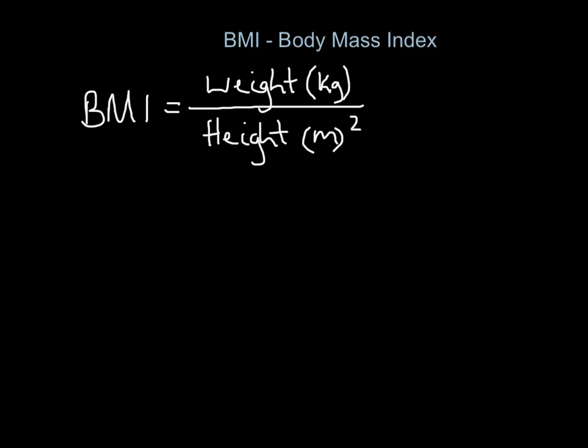You could do it yourselves - you need your weight in kilos and your height in meters squared, and you will come up with a value. It should be a two-digit value; there might be a decimal point, round it up or down, but you should come up with a value that looks something like this.